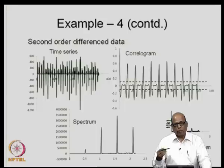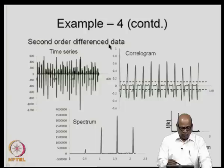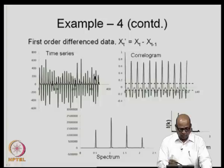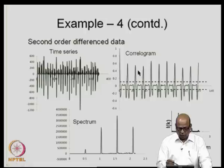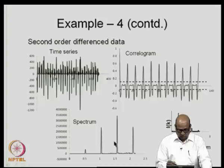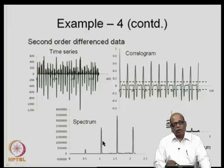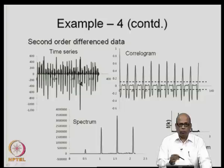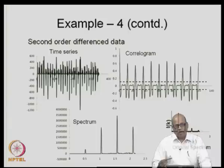Moving to second order differencing — taking x'_t − x'_{t−1} — the time series and correlogram still indicate significant periodicities are present. The spectral density for the second order differenced data again indicates possible periodicities, suggesting the series is still not devoid of periodicities.